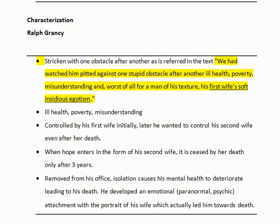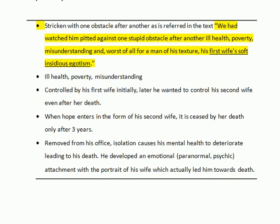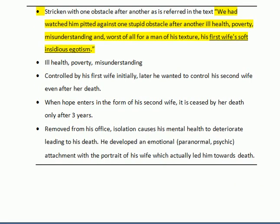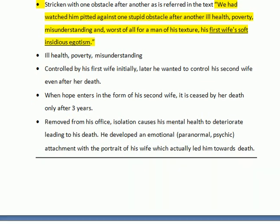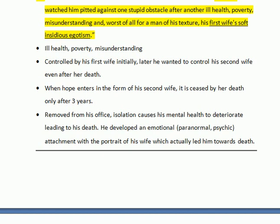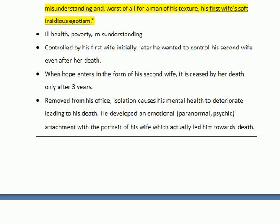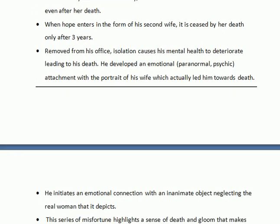Moving towards characterization, we see Ralph Grancy as a very important character. We are told in the very beginning that he was stricken with one obstacle after another, as we see in the lines: 'We had watched and pitied against one stupid obstacle after another — ill health, poverty, misunderstanding, and worst of all, his first wife's soft insidious egoism.' So Grancy was a victim of all kinds of misfortune. He was controlled by his first wife initially, and later wanted to control his second wife even after her death.